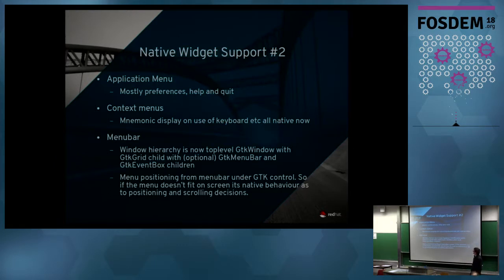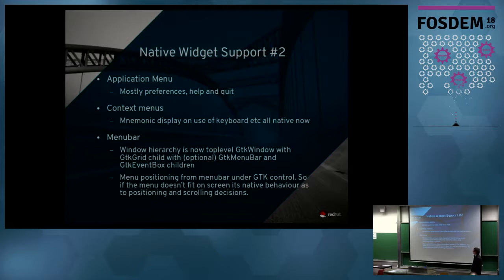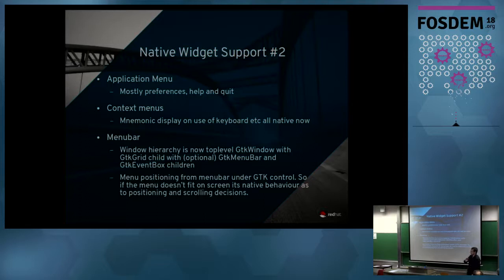The app menu available in GNOME is fully native. Our context menus are now native — if you right-click on something we have real GTK menus. The menu bar is now a native GTK3 menu bar and the menus within it are native GTK3 as well. This derives from the Unity work done a couple of years ago. All menu positioning is native GTK, so if a menu won't fit on screen, there's a native GTK fallback — those bugs go to the toolkit rather than to us.